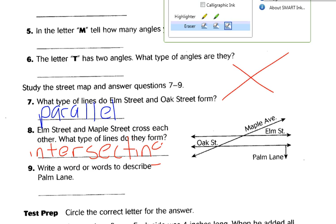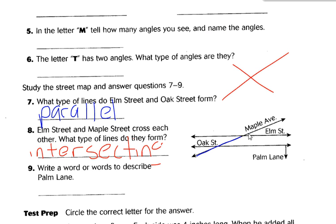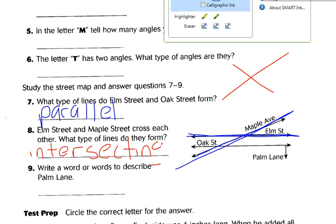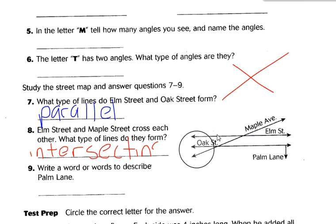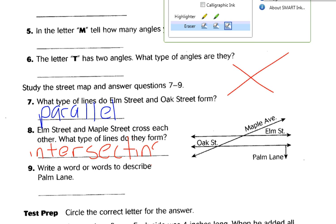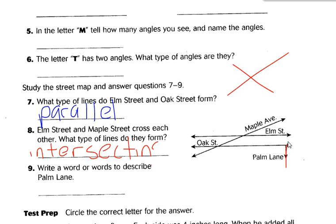So Maple and Elm, so here's Maple and here's Elm. They cross, right? They make an X, so they're intersecting lines. It says write a word to describe Palm Lane. Oh, Palm Lane. That's an interesting one. So Palm Lane is right here. They're vertical. Isn't that line vertical?